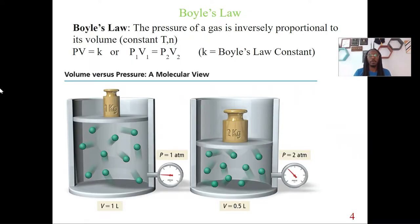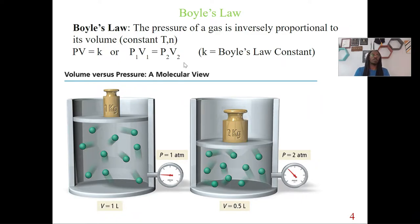First up, we have Boyle's law. Boyle's law states that the pressure of a gas is inversely proportional to its volume. In this case, we're focused on pressure and volume, keeping our temperature and moles constant. Boyle's law can be written as P1V1 = P2V2, or as PV = K, with K being the Boyle's law constant.